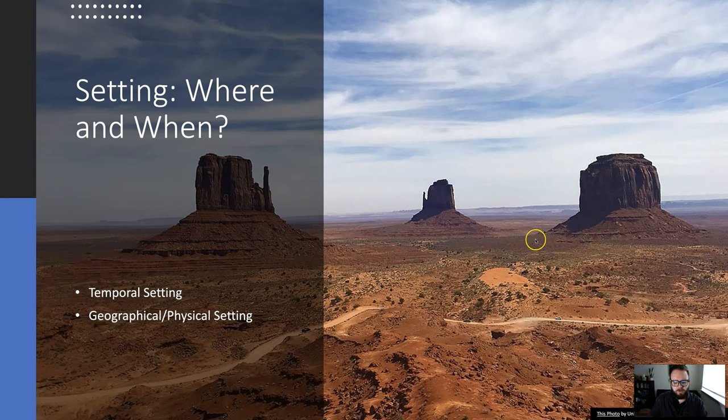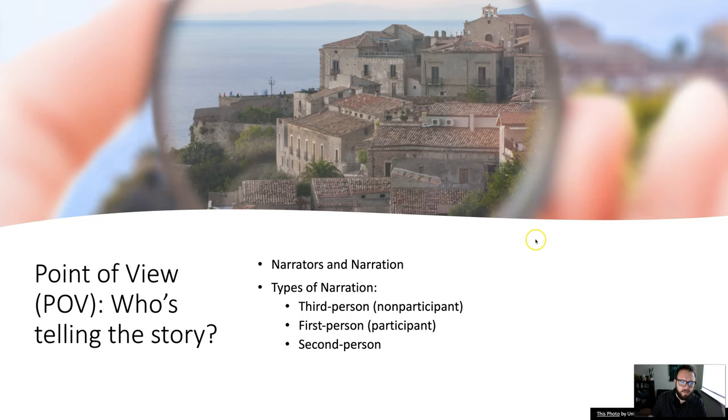Point of view is now we're getting into who's telling the story. It's important to remember when we're reading fiction, particularly, that we are never ever ever ever being told the story by the author. We are always being told the story by a narrator. A narrator is mediating the event, what we see of the events. It's holding up a lens.